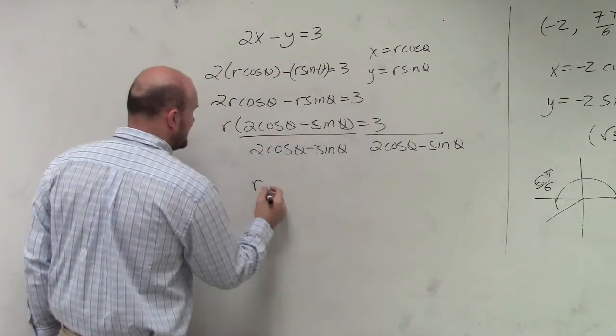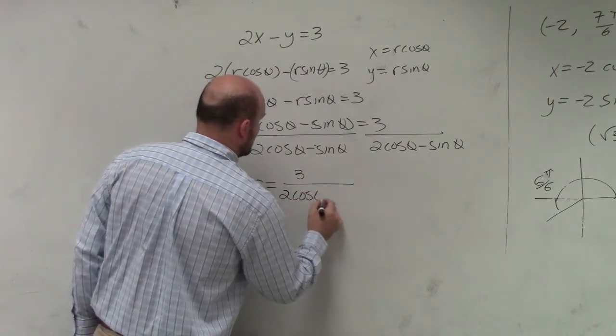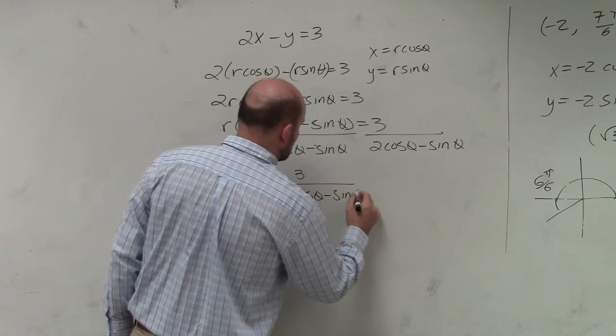So my rectangular equation is 3 over 2 cosine of theta minus sine of theta.